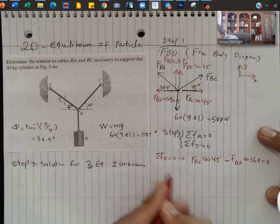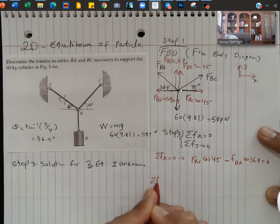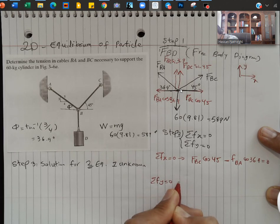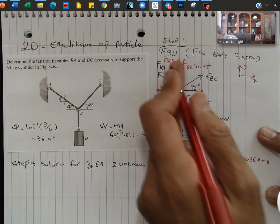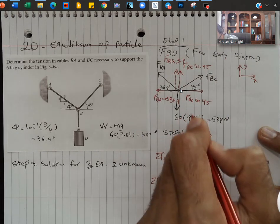And then I can write the same equation for Fy. Sum of Fy equal to 0.